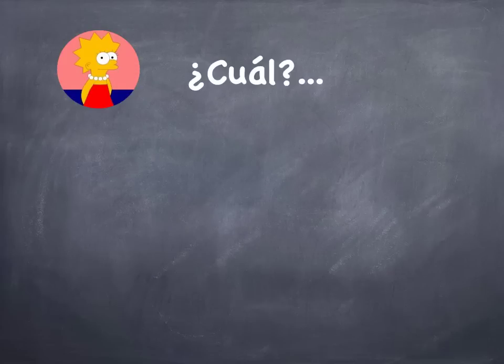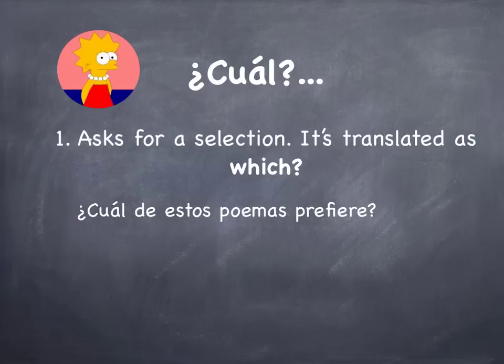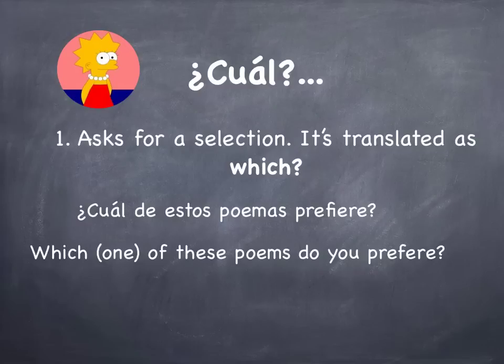Now let's take a look at Cuál. When you want to ask for a selection, it's translated as 'which.' For example, ¿Cuál de estos poemas prefieres? — Which one of these poems do you prefer?